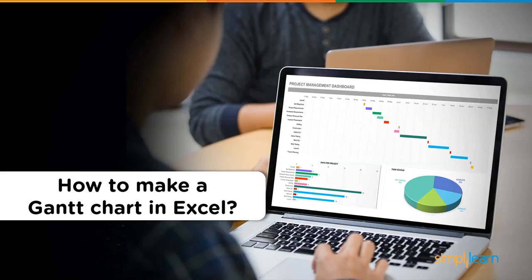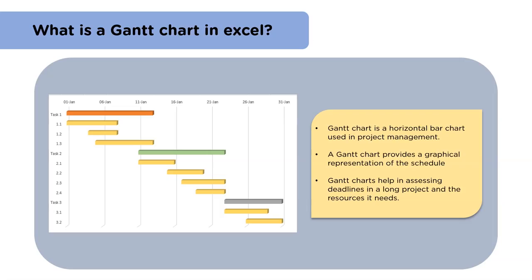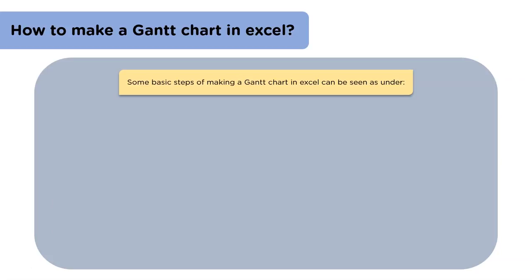Now let's have a look at the process of making a Gantt chart in Excel. Before we begin, it's important we know what is a Gantt chart. A Gantt chart is like a horizontal bar chart that is used for project management. With the help of a Gantt chart, we can check the status of the task, the date they start, the date they end, and their dependencies on each other. Gantt chart helps in coordinating and monitoring different tasks in a project. Now let's have a look at the steps that will help us in making a Gantt chart.